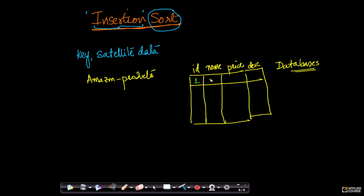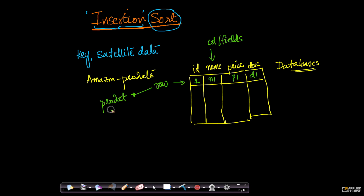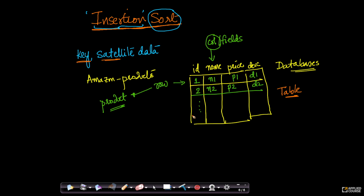For example, I could have ID 1, where the product name is N1, the price is P1, and the description is D1. Each row in this table represents information about one product. Each column — also called a field — represents one aspect of a product, maybe its name or its price or the product description. Similarly, I could have product ID 2, whose name is N2, price is P2, description is D2, and so on. Now imagine if I want to sort all the products by price.